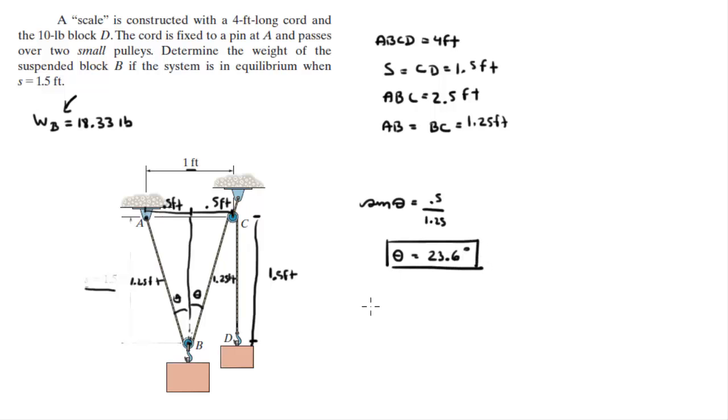So that's for theta. Sum of the forces in the Y is equal to 0. So you know that going up you got this tension and this tension. This tension T is the same as the tension created by block D, which weighs 10 pounds. So T is equal to 10 pounds. And you know that sum of the forces in the Y is equal to 0. We have two tensions going up times the cosine of theta, which we just found, minus the weight of the block is equal to 0. So if you solve for the weight of the block, you get that the weight of the block is equal to 2T times the cosine of 23.6, and T is 10 pounds.